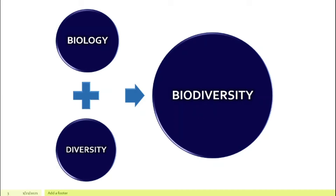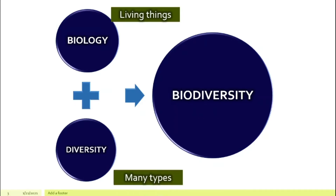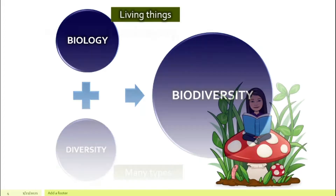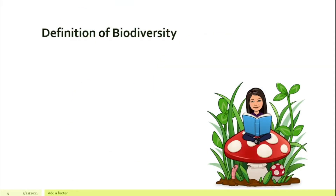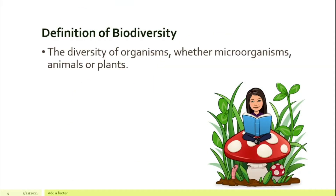Let's break it down. What is the meaning of biology? Biology means living things, and diversity means many different types. So when you put this together, the definition of biodiversity is the diversity of organisms, whether microorganisms, animals or plants — meaning we have many different types of living things, whether they are small or big, whether they are animals or plants.